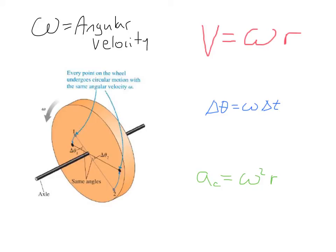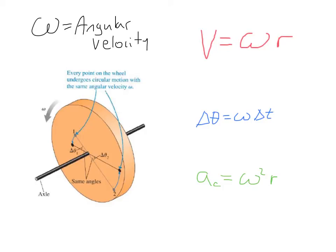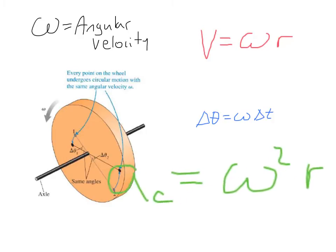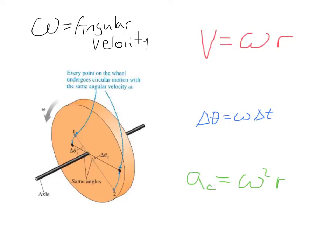Because every point on a rotating object moves in a circle, we can carry forward all results from circular motion into rotational motion. The angular displacement of any point on the wheel is found from the corresponding equation. The speed of any particle on the wheel equals v = ωR, and the particle's centripetal acceleration is ω²R. Review the centripetal acceleration v²/R and see how it becomes ω²R from that derivation.